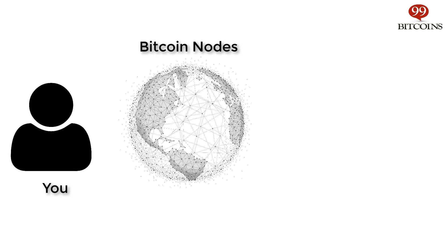After you send a Bitcoin transaction, the first step it goes through is transaction verification. This means the transaction is checked by every computer holding a copy of the Bitcoin blockchain for validity. These computers are called nodes. Basically, at this stage, the nodes are checking Bitcoin's history to make sure you actually have the Bitcoins in your account balance that you want to spend.